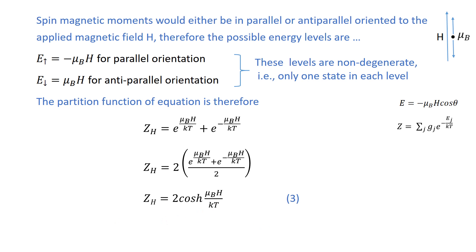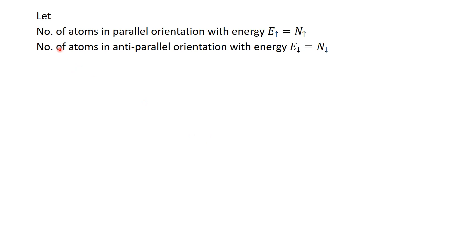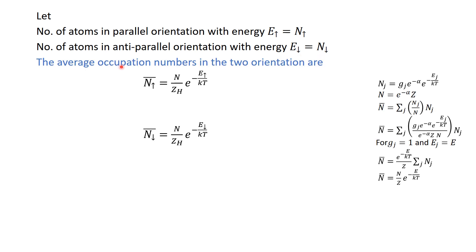Let the number of atoms in the parallel orientation with energy E↑ be N↑, and for the anti-parallel orientation with energy E↓ be N↓. The average occupation numbers are: N↑ average and N↓ average, obtained from the Maxwell-Boltzmann distribution function. Using the partition function, we have N equal to a corresponding expression.